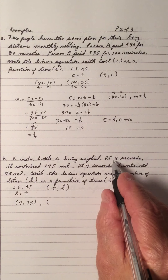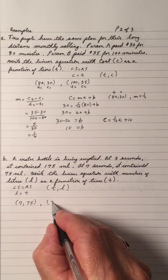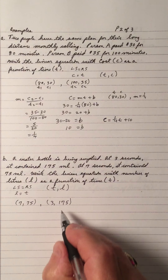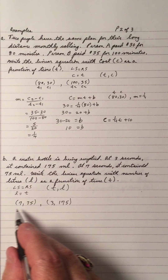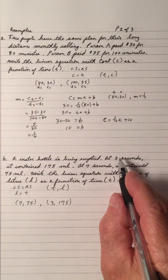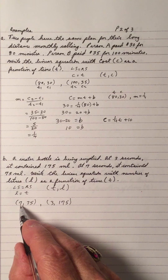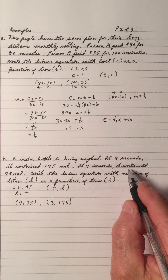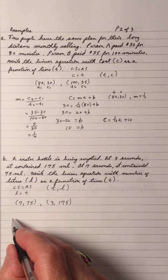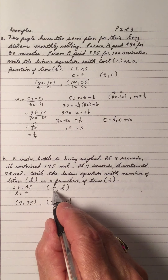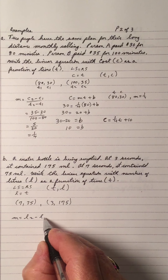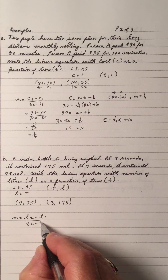And at 3 seconds it's 175. It doesn't make any difference which one I put in first. I could put the 3 and 175 first and the 7 and 75 after. But as time goes by, it's going down. The equation uses t and l. So the slope is l2 minus l1 over t2 minus t1.